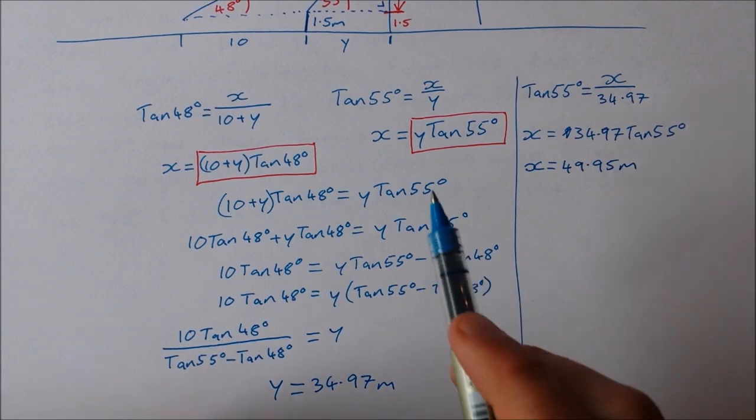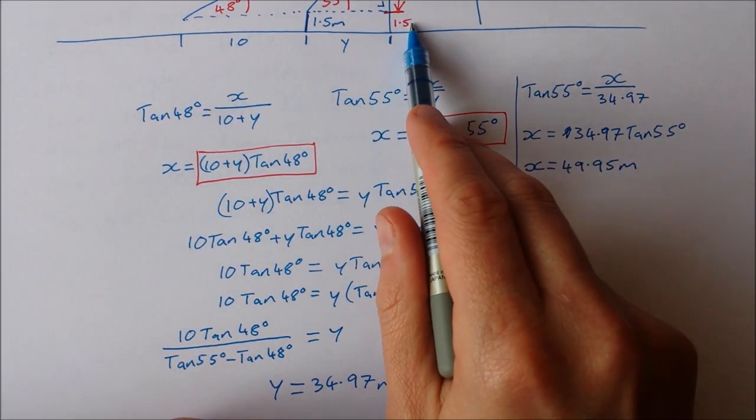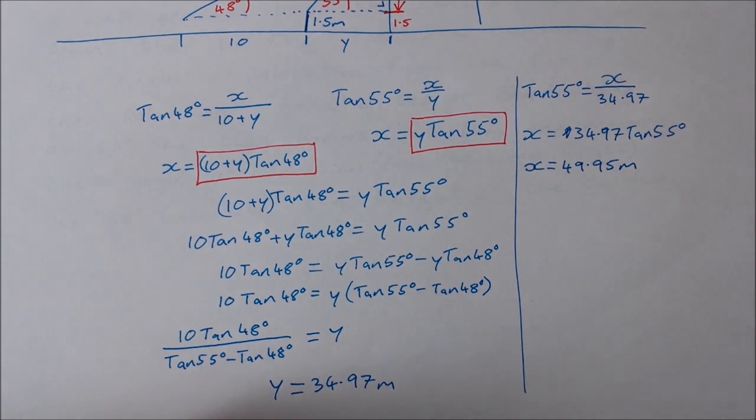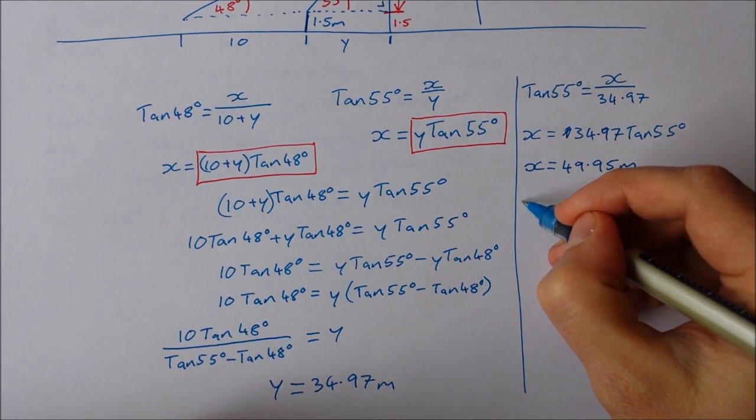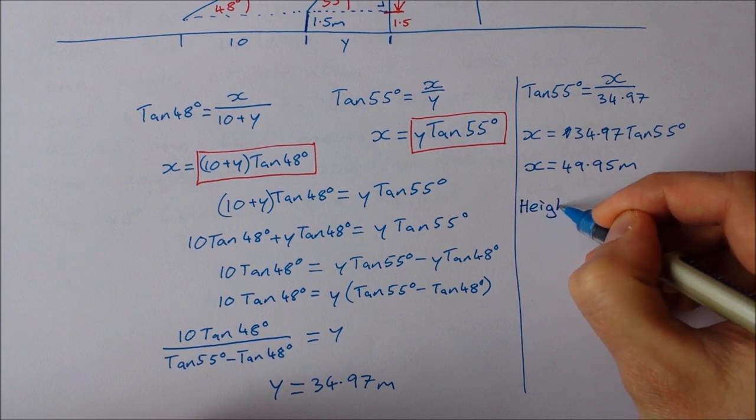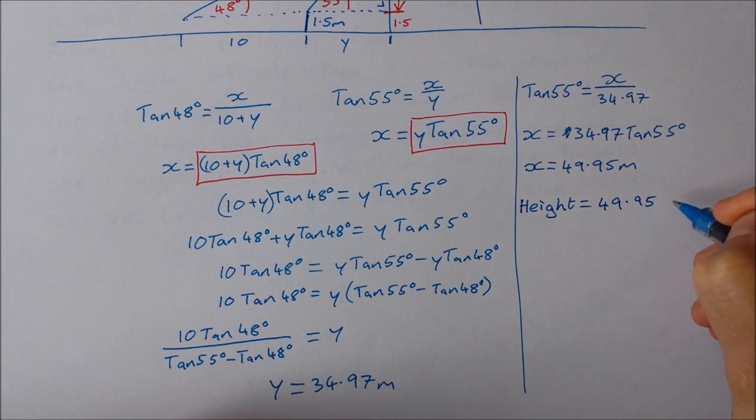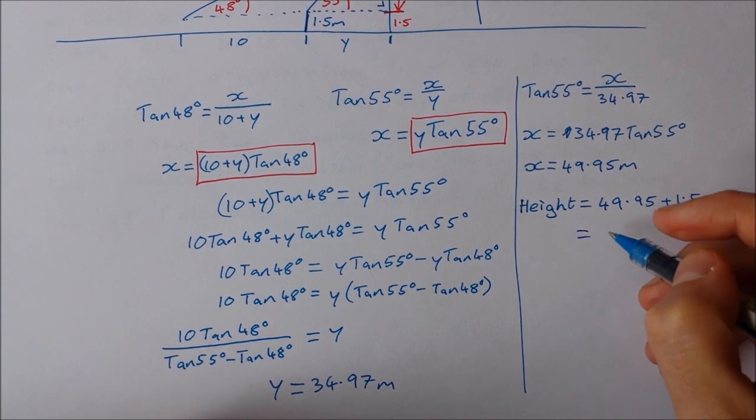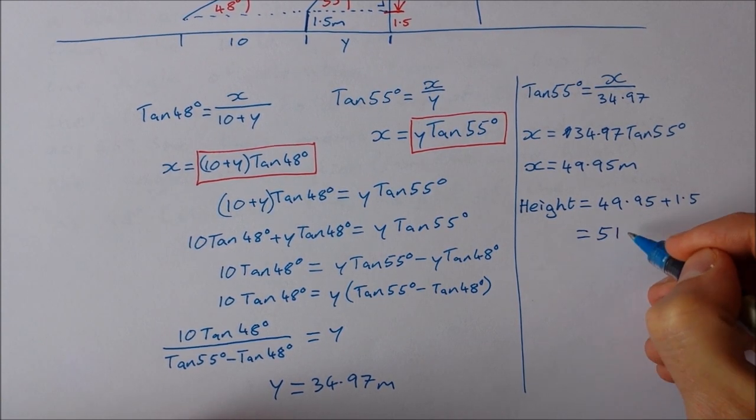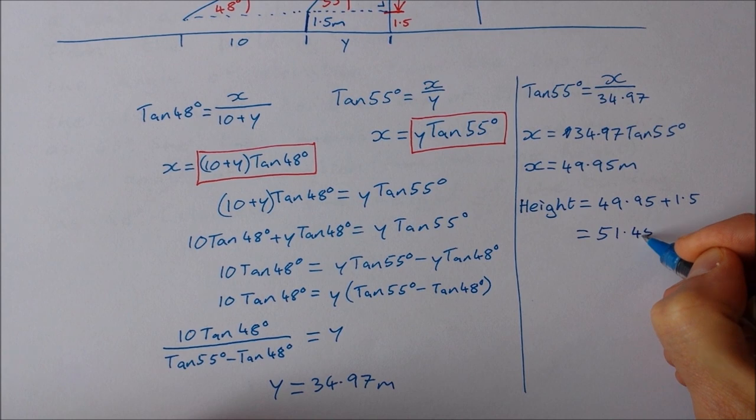Now remember from earlier on that's just x. We need to add on our 1.5. So that means the building height is equal to 39.95 plus 1.5, which is equal to 51.45 meters.